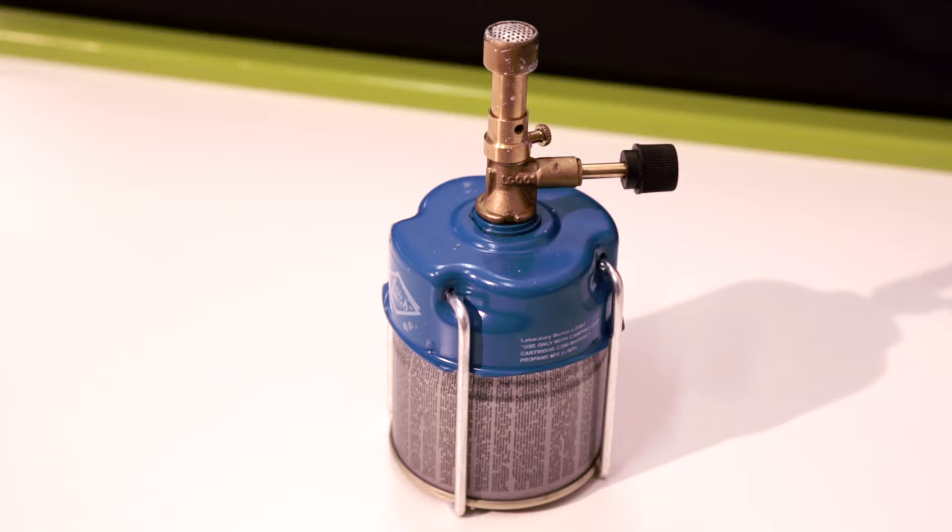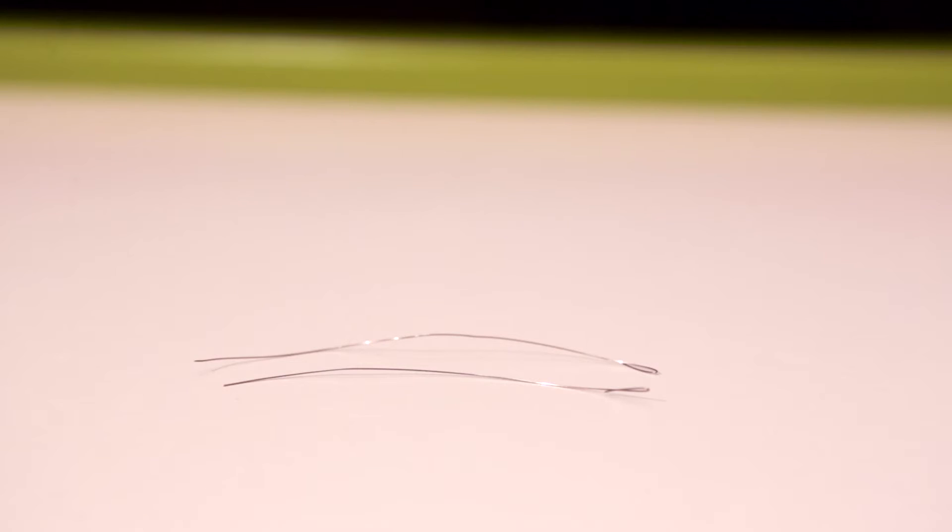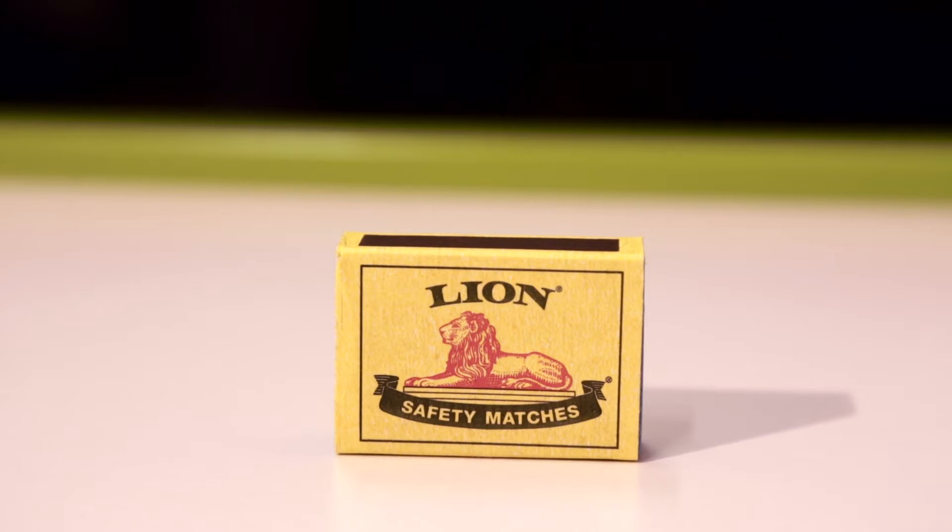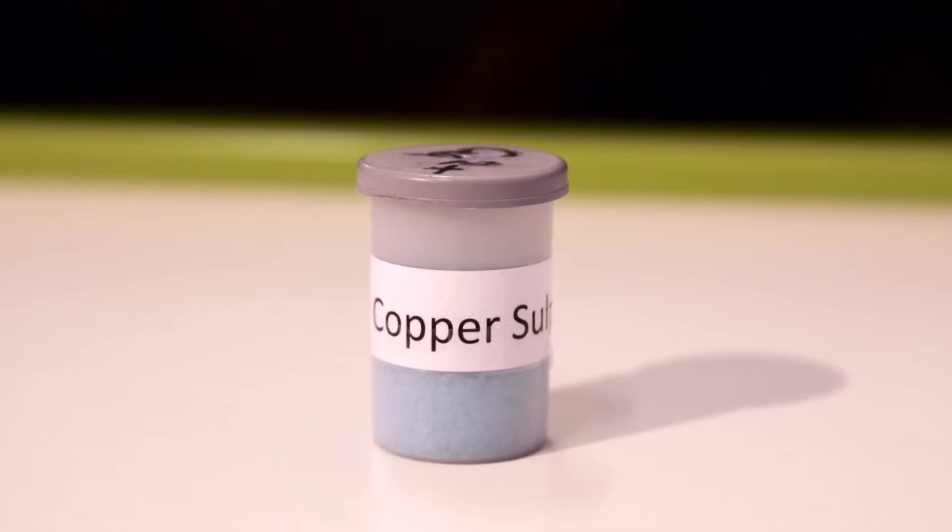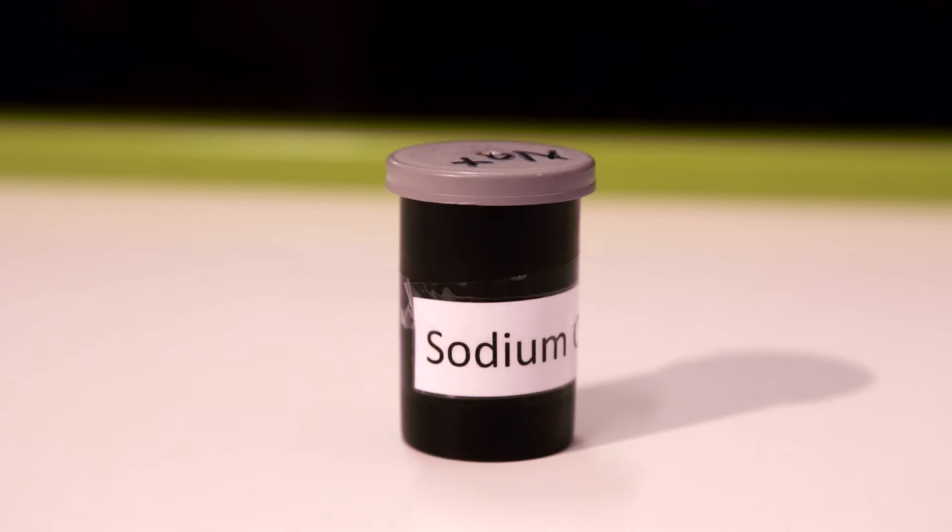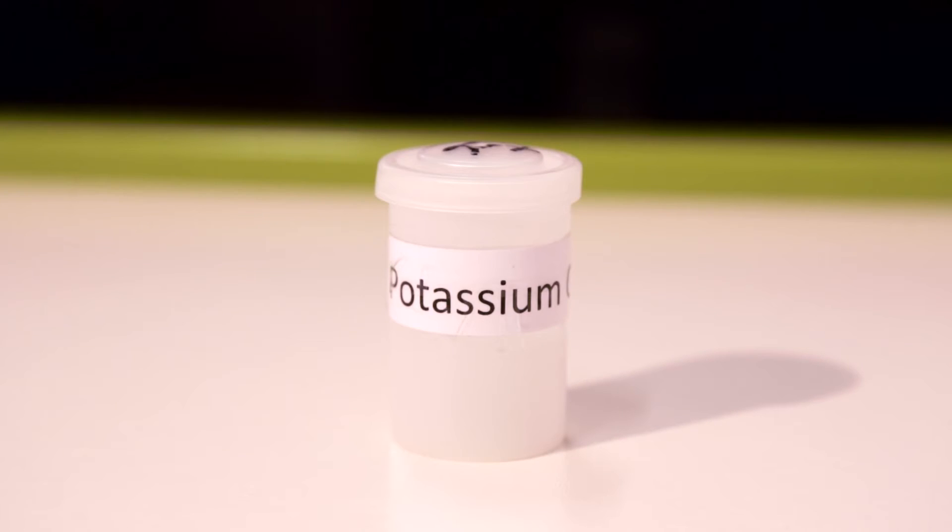We will use a Bunsen burner, a piece of platinum wire mounted in glass (nichrome wire can be used if platinum is not available), a one molar hydrochloric acid solution, distilled water, and a sample of each of the following: copper ions, strontium ions, lithium ions, sodium ions, barium ions, and potassium ions.